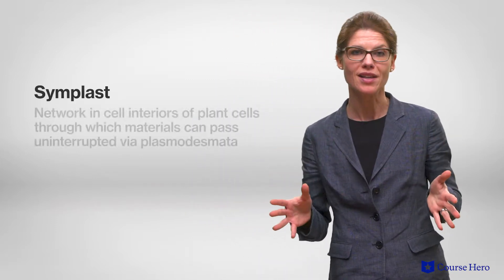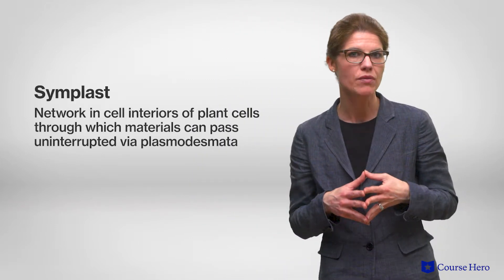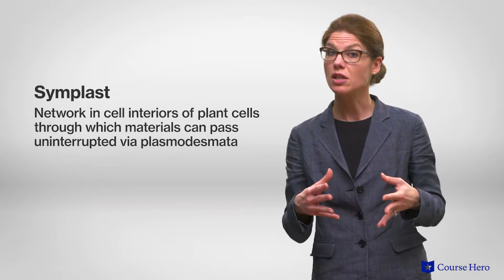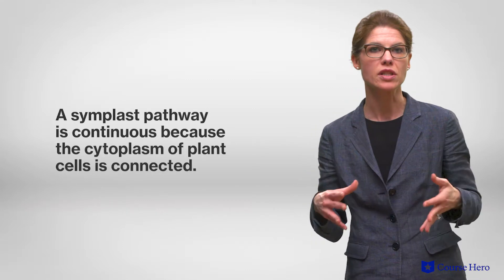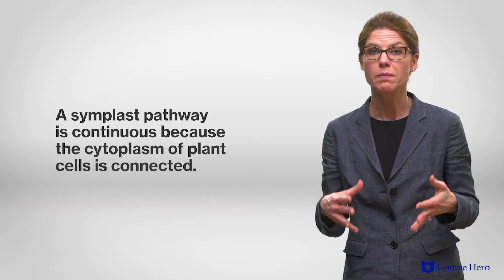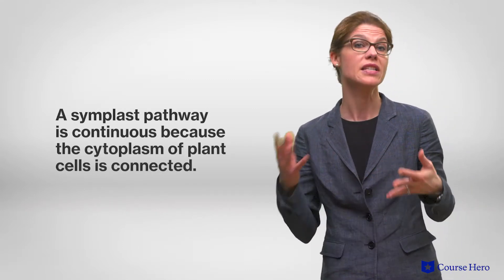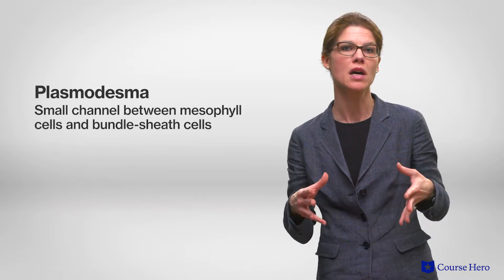The other pathway is referred to as the symplast. Using this pathway involves the water and minerals passing through the cytoplasm of the plant cells. The pathway is continuous because the cytoplasm of one cell is connected to that of its neighboring cells by small channels known as plasmodesmata.